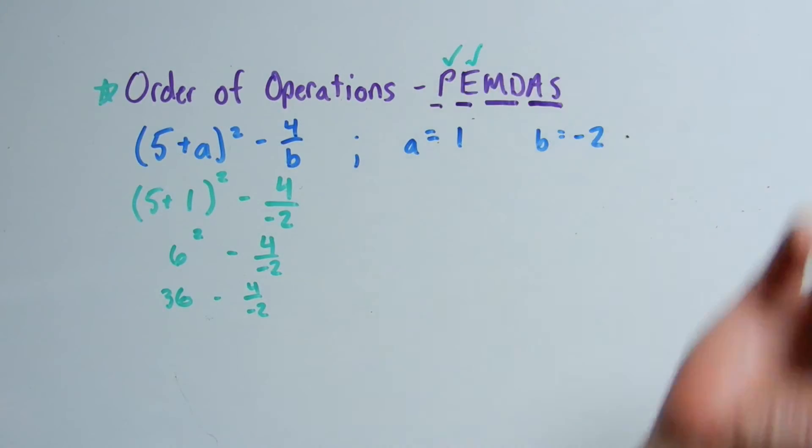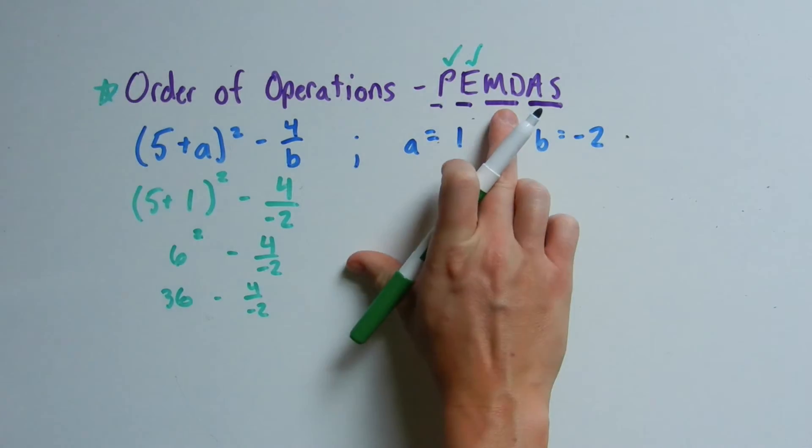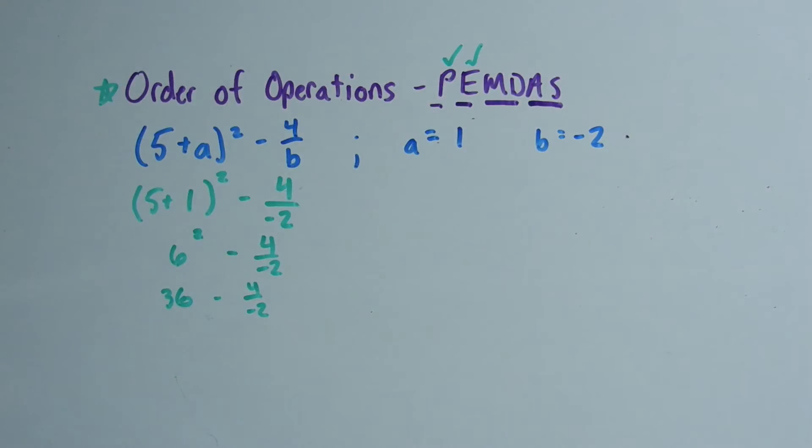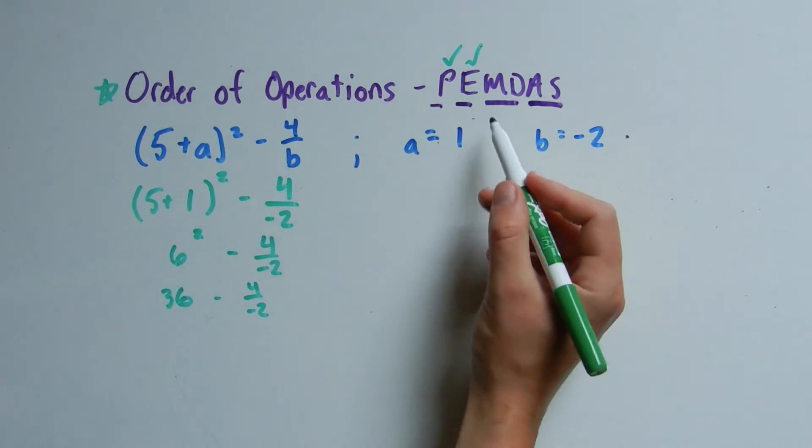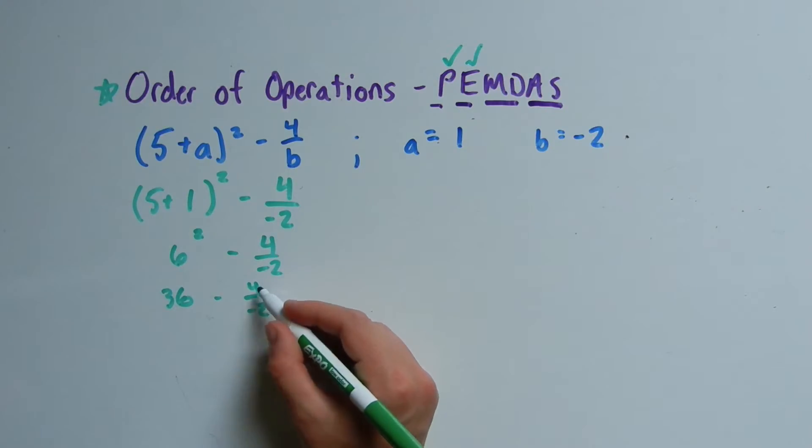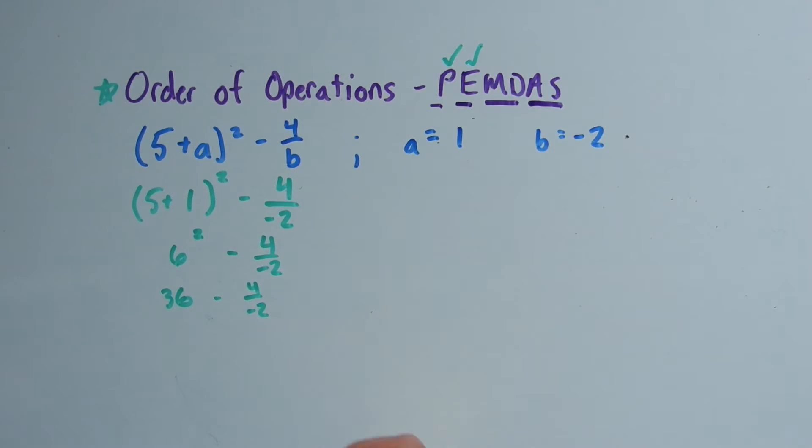So now we've evaluated our exponent. Next is multiplication and division. Remember, the order of multiplication and division doesn't matter—you just have to make sure you do those before addition and subtraction. For us, we only have division once in this problem and that's with the fraction sign.